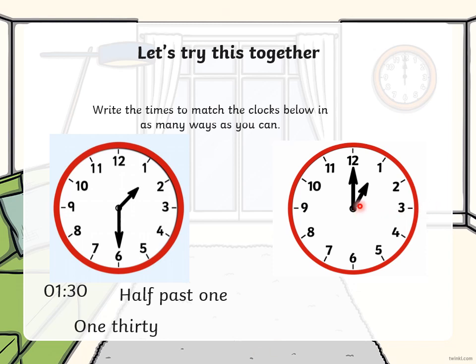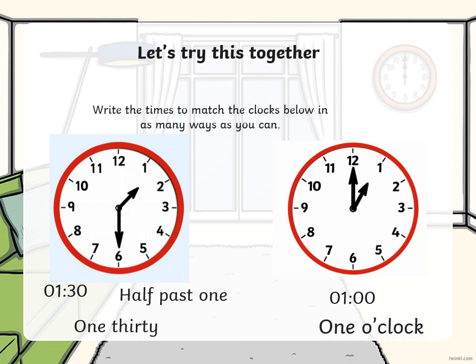Let's try the other clock. Our hour hand is pointing to the one, so our hour is going to be one. And then we've got our minute hand on the 12 — the 12 is our full hour, so it's on the dot of o'clock. So now we need to write these times: one o'clock, and one o'clock.